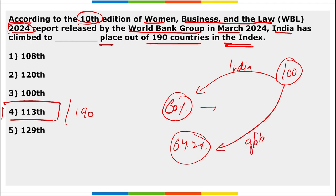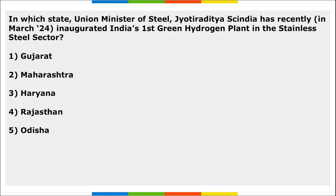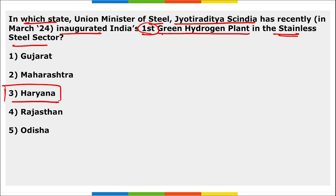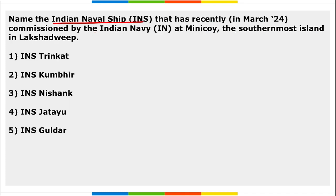Next: in which state has Union Minister of Steel Jyotiraditya Scindia recently inaugurated India's first green hydrogen plant in the stainless steel sector? It is the state of Haryana. In Haryana, Jyotiraditya Scindia has recently inaugurated India's first green hydrogen plant in the stainless steel sector.